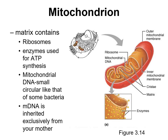The matrix contains ribosomes, enzymes used in the synthesis of ATP, and mitochondrial DNA. Mitochondria have their own DNA, completely separate and distinct from the DNA in the nucleus. This DNA looks more like the circular DNA found in bacteria. Interestingly, you inherit this DNA from your mother — during fertilization, the mitochondria in the sperm cells are destroyed, so the only mitochondria that survive come from the egg.